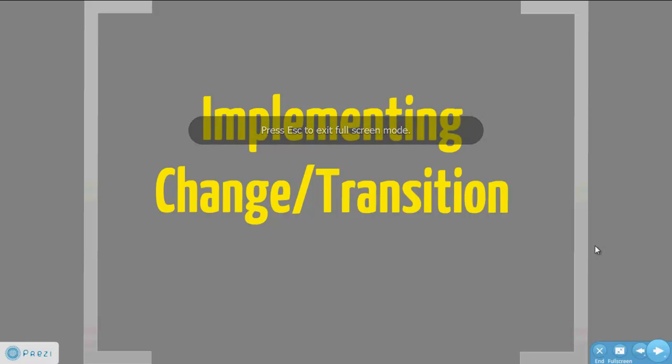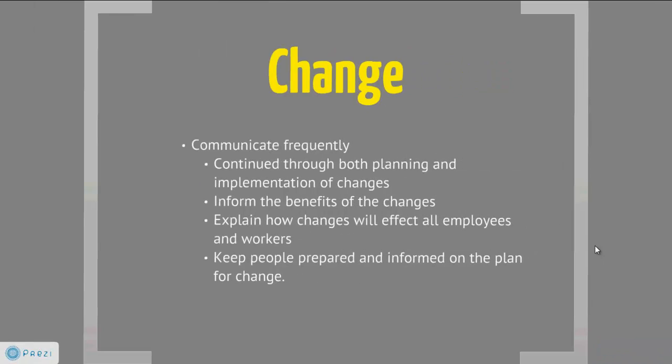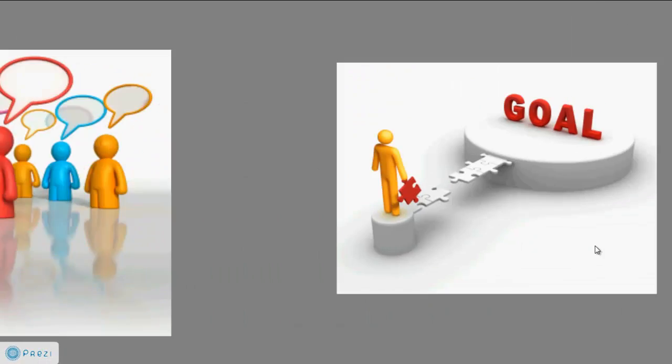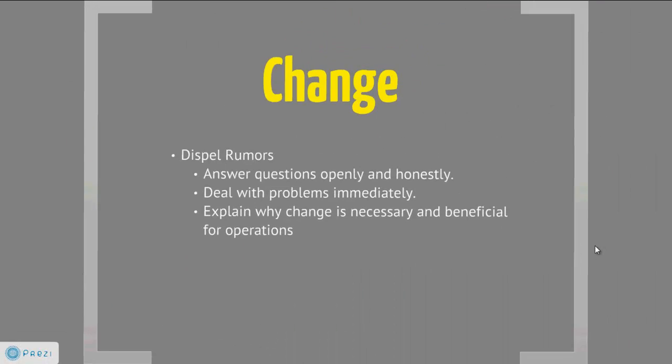Implementing Change Transition: Communication during the process is important, especially conveying the benefits of new changes. The cause-and-effect reasoning will help workers and employees who are against it better understand the need for it. A well-informed employee is helpful during the process of change and will also help prepare them for it. Dispel rumors — answer questions openly and honestly so that there are no discrepancies during the process. Do not take too long to address problems, as it shows a weakness in the implementation we are trying to establish in the organization.